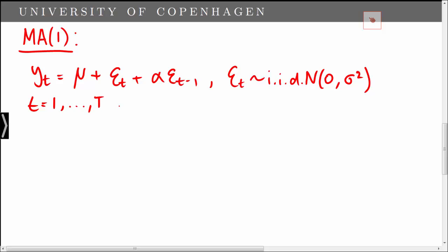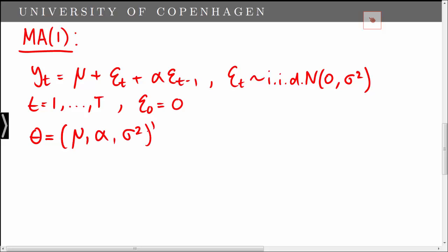Moreover, we set epsilon 0 equal to 0. The model parameters are contained in the vector theta that is given by mu, alpha, and sigma squared. Our task is to estimate theta.